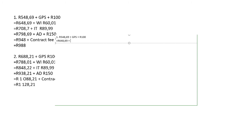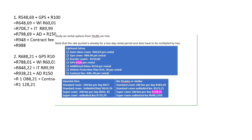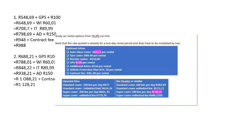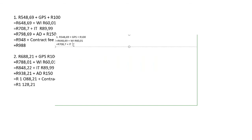We also add windscreen insurance — it's 60 rands 01 cent — so we add 60.01, which equals 698 rand 70 cents. Then we add insurance for tires, which is 89 rand 99 cents, so we add that amount, which equals 788 rand 69 cents.